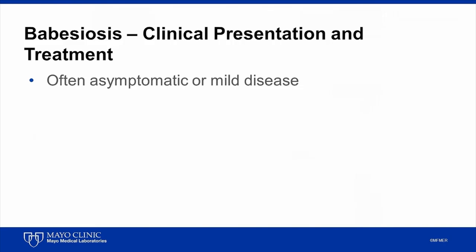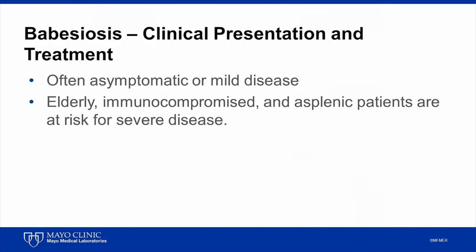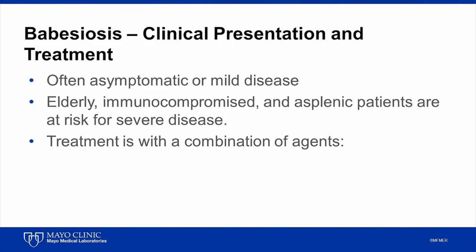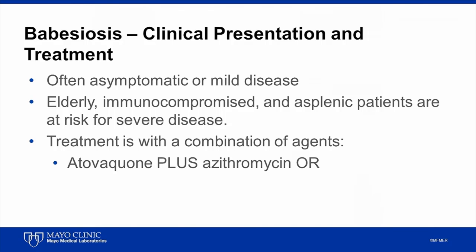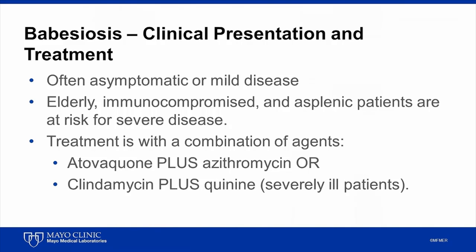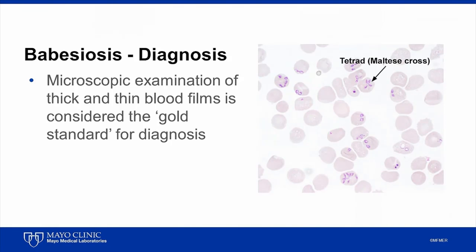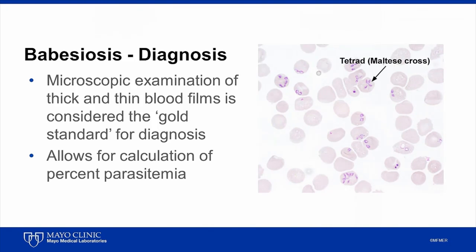Babesiosis is often asymptomatic or causes only mild disease. However, elderly, immunocompromised, and asplenic patients are at risk for severe disease. Treatment is with a combination of agents. The standard therapy for most patients is atovaquone plus azithromycin, whereas clindamycin plus quinine is usually reserved for severely ill patients. Babesiosis is traditionally diagnosed using microscopic examination of thick and thin blood films, which also allows for calculation of percent parasitemia — important for guiding therapy and determining prognosis. However, the Mayo Clinic Babesia PCR is more sensitive than blood films and is therefore the initial recommended test for detection of babesiosis.